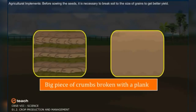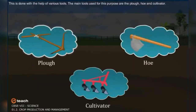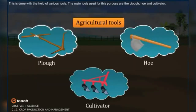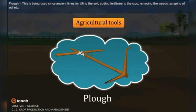Agricultural Implements. Before sowing the seed, it is necessary to break the soil to the size of grains to get a better yield. This is done with the help of various tools. The main tools used for this purpose are the plough, hoe, and cultivator.